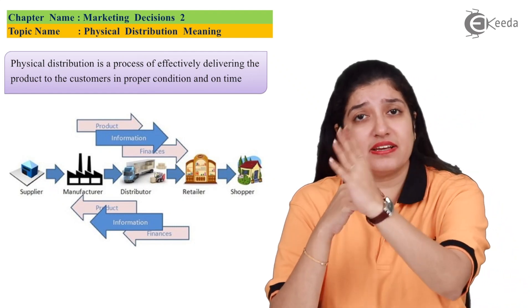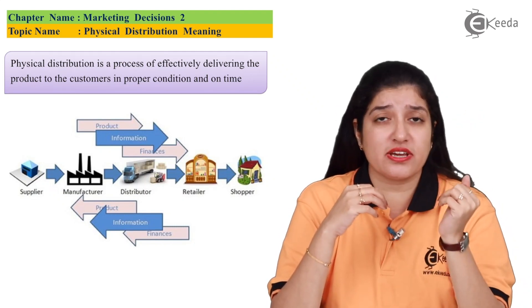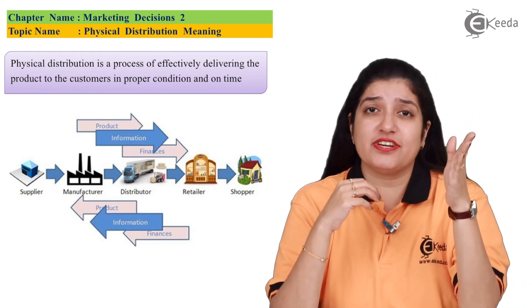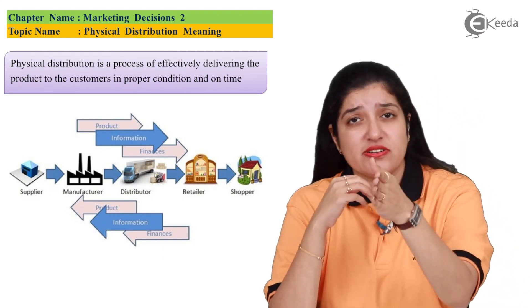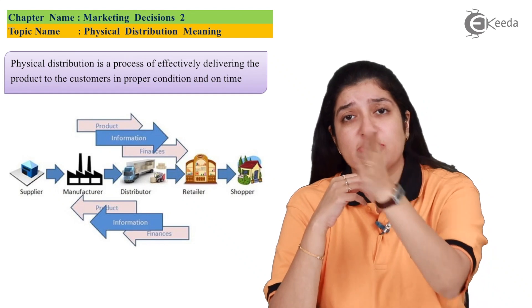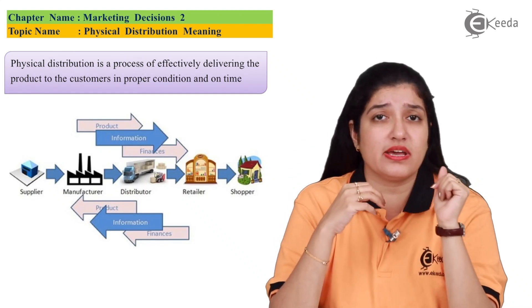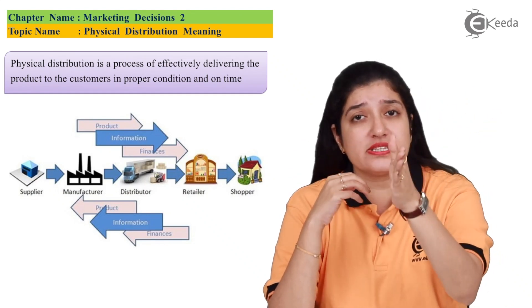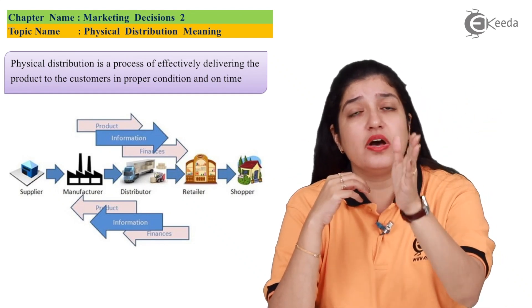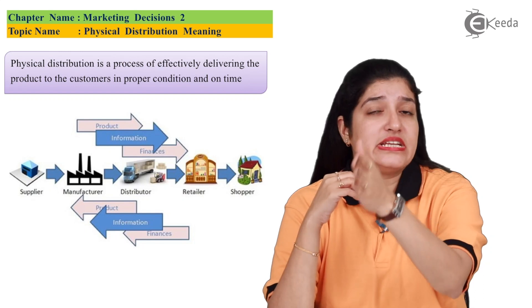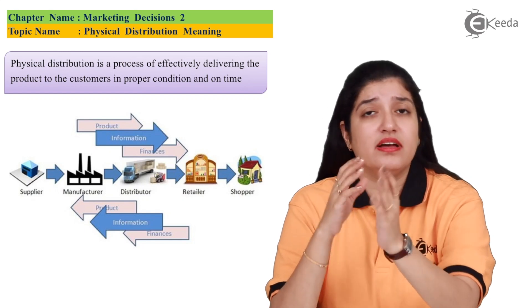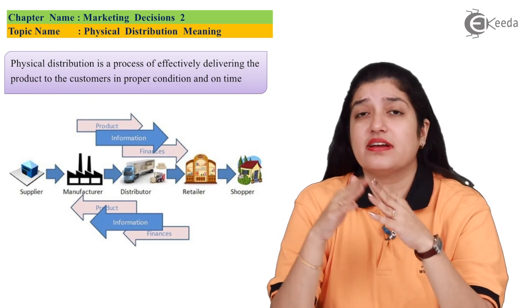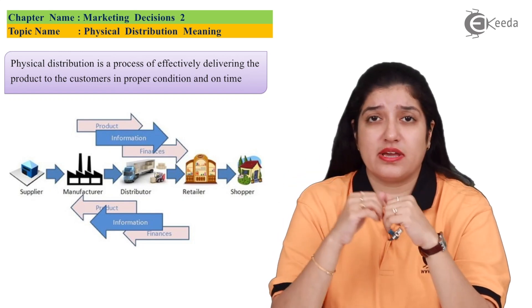The manufacturer can sell directly to the customer. The manufacturer can have an agent, and the agent sells to the customer. The manufacturer can give to a wholesaler, the wholesaler gives to a retailer, and the retailer gives to the customer.